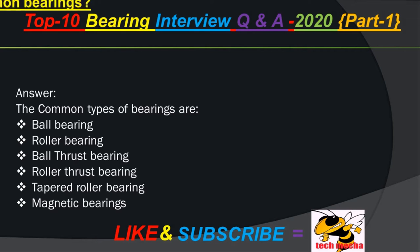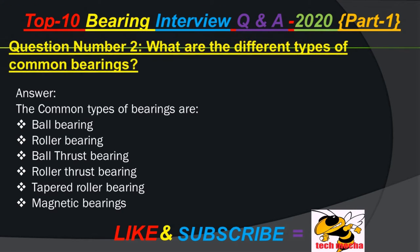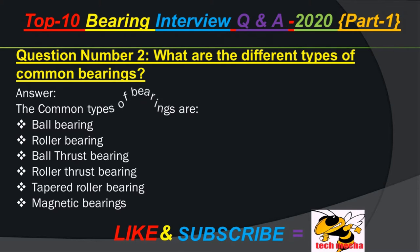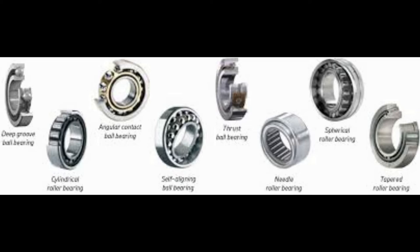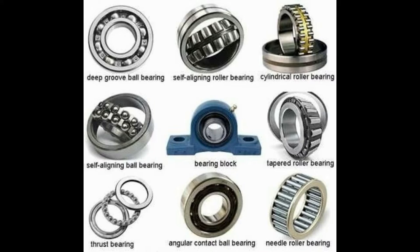Question number 2: What are the different types of common bearings? Answer: Common types of bearings are ball bearing, roller bearing, ball thrust bearing, roller thrust bearing, tapered roller bearing, and magnetic bearings.